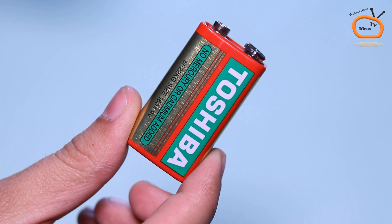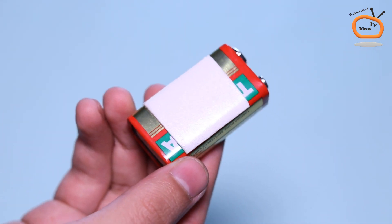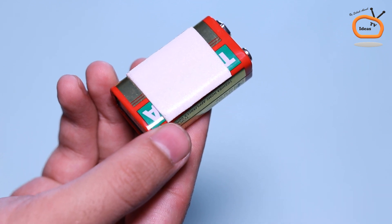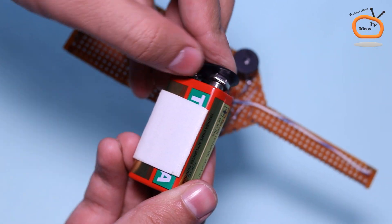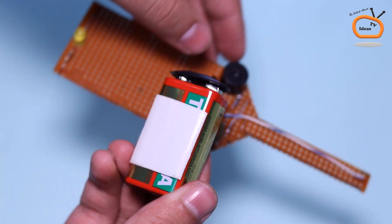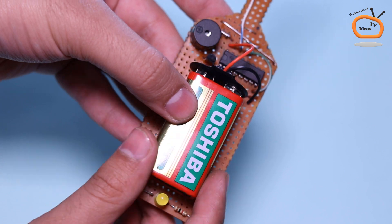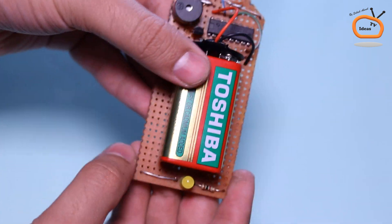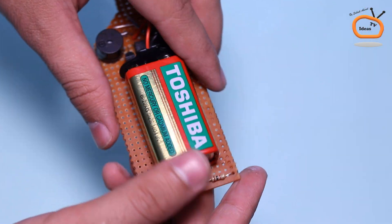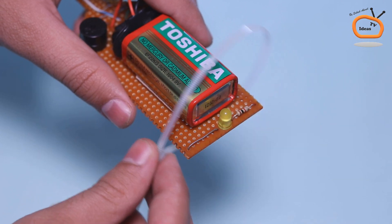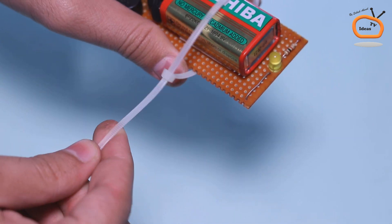I am connecting a 9V battery and placing it to the circuit with double-sided tape. And also using a cable tie clip for providing external support to the battery.